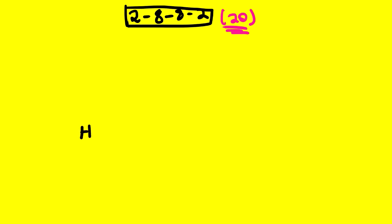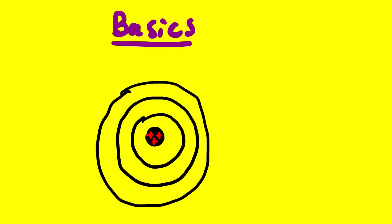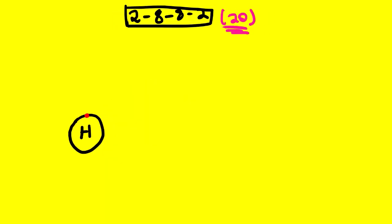Suppose we want to draw the atomic structure of hydrogen. We know hydrogen is element number 1, so we represent the nucleus using the symbol H. We know it has one proton. Drawing the first energy level, hydrogen has only one electron, so we represent that electron using a dot on the first energy level. We refer to this inner ring as the first energy level, then the second, third, and so forth.